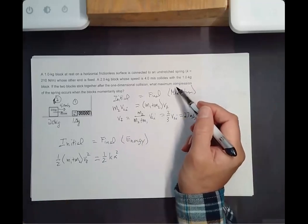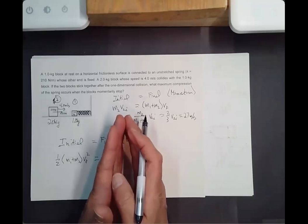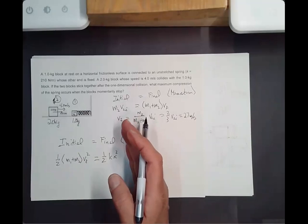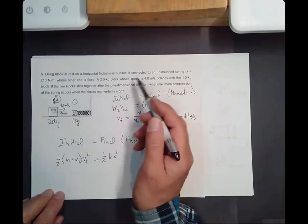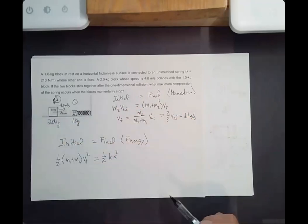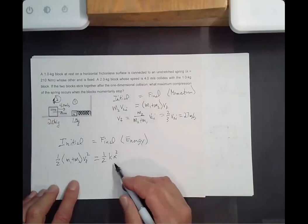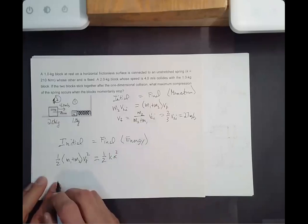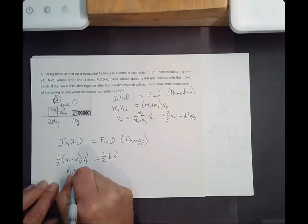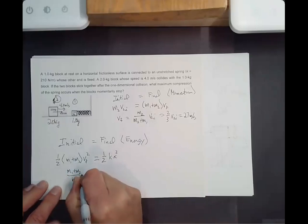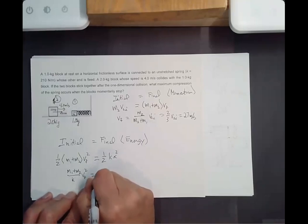We've got one-half (M1 plus M2) times V_final squared as the initial kinetic energy for this second half. That will equal one-half K X squared, the energy stored in a compressed spring. It's asking for the maximum compression. The spring will compress, the blocks come to rest instantaneously, and with no friction they'll get pushed back out with the same speed. So I can solve for X squared: both terms have a one-half that cancels, divide by K, and I have (M1 plus M2) over K times V_final squared equals X squared.